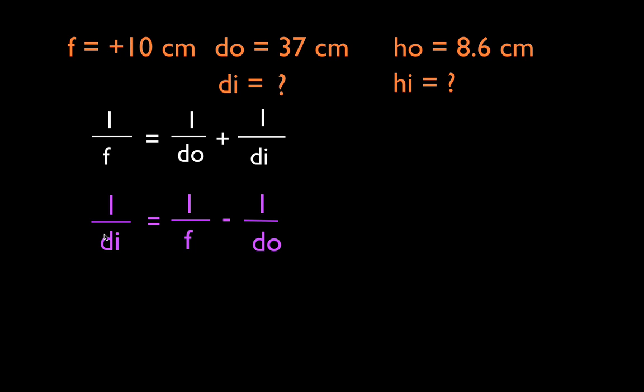And again we're solving for the image distance which is 1 over di. Okay now we can simply plug the numbers in. The focal length is 10. 1 over 10 minus 1 over do which is 37. So we have 1 over 37 and I'm just going to put this into my calculator. 1 divided by 10 minus 1 divided by 37. As long as you have a regular graphing calculator you'll get the right answer. You don't need to use any parentheses or anything like that. If you have an order of operations then you'll come up with that 1 over di is equal to 0.0730 or 0.073.